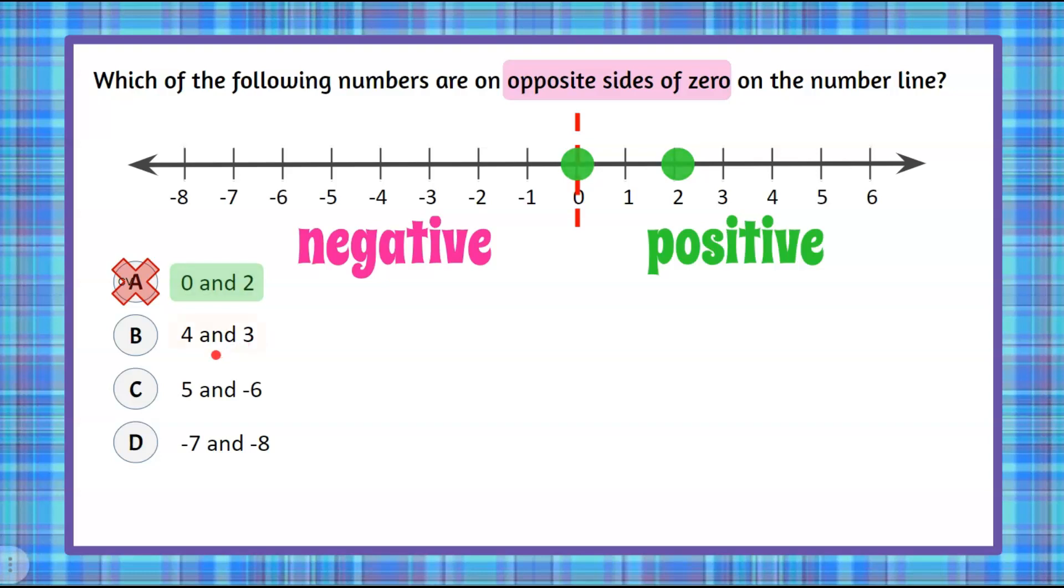Let's graph four and three. Here's four and here's three. We can see that both of those values are on the same side of zero. They're on the positive side of zero on the number line, so it cannot be B.